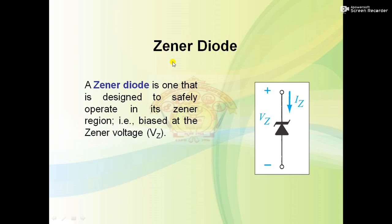Another type of diode is the Zener diode. The difference between the Zener diode and the PN junction diode is that the PN junction diode operates only in forward biased condition, whereas the Zener diode operates not only in forward bias but also in reverse biased condition. When it is operating in the reverse biased condition, the Zener diode acts as a voltage regulator circuit.